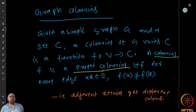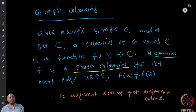A coloring f is called a proper coloring if it gives different colors to adjacent vertices. So if u and v are adjacent in the graph, then f(u) must be different from f(v). Otherwise the coloring is not proper. Even if it is not proper there are applications for that, but most questions will look at proper coloring.